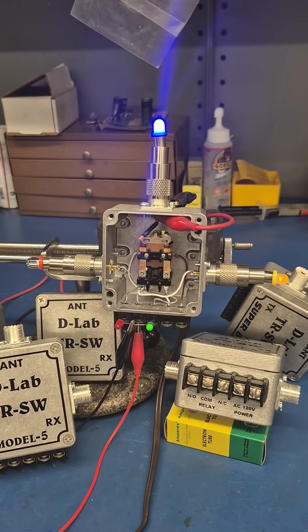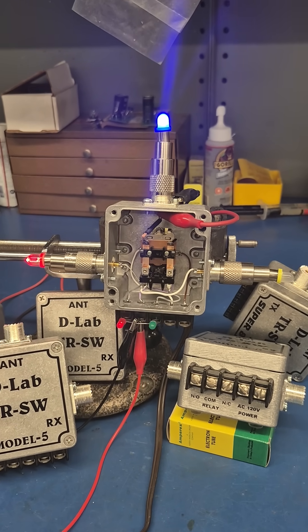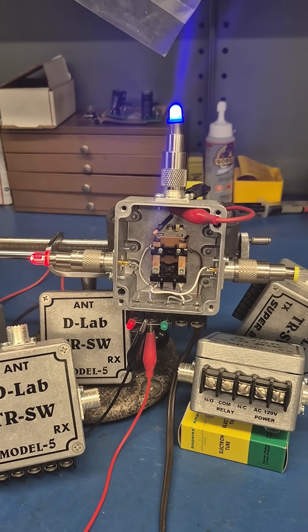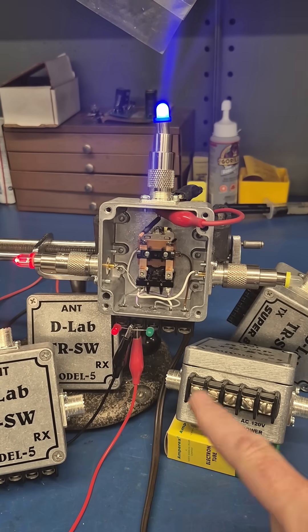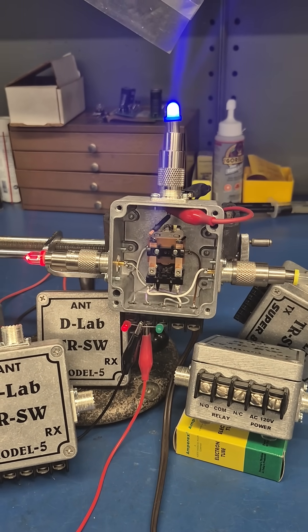So now I'm going to apply 120 volts and toggle the switch and now we are in transmit mode. The receive line is off and you see my muting contacts toggle.